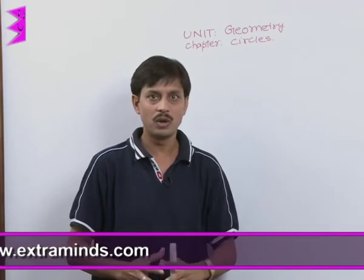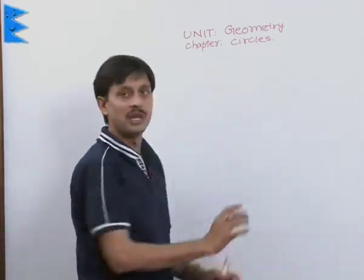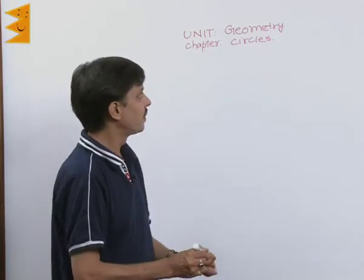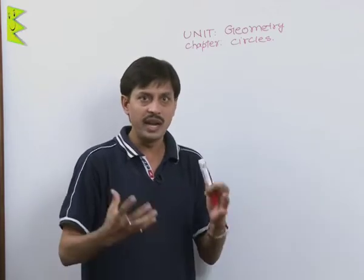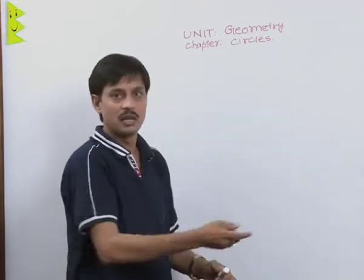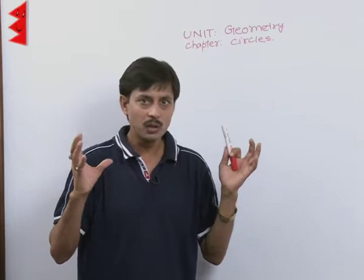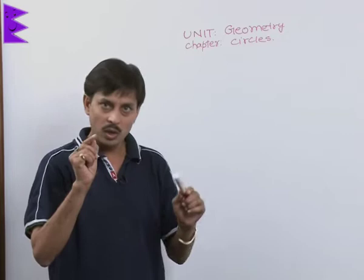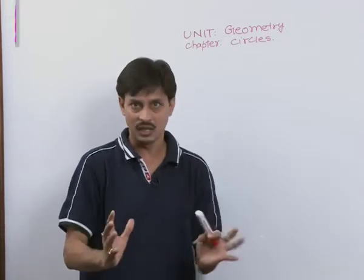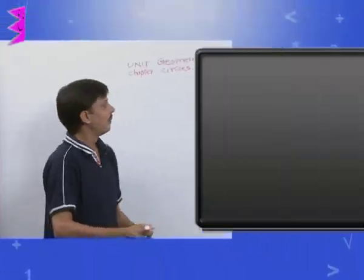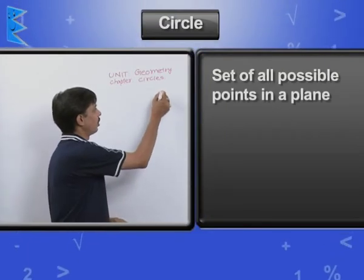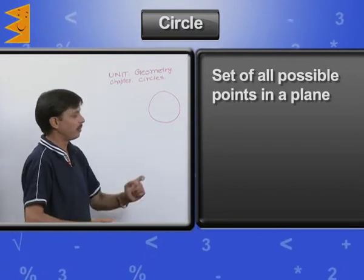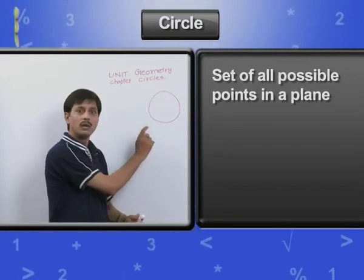The question raised: what is the definition of a circle? You have all been plotting circles many times, but what is the correct definition? The correct definition is that a circle is the set of all points in a plane. Here, it is necessary to mention the word 'plane.'